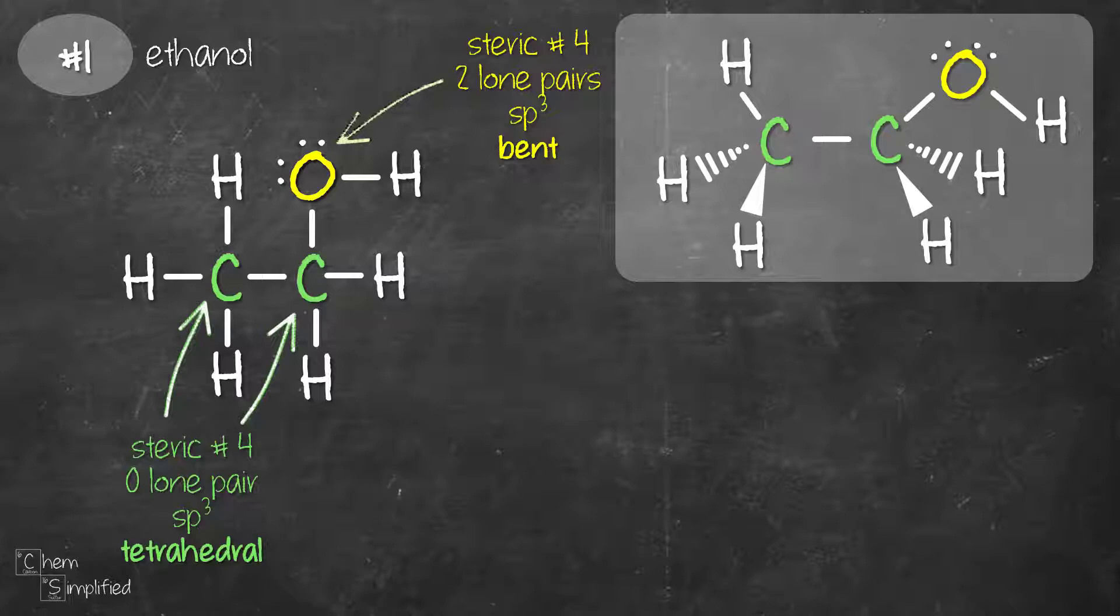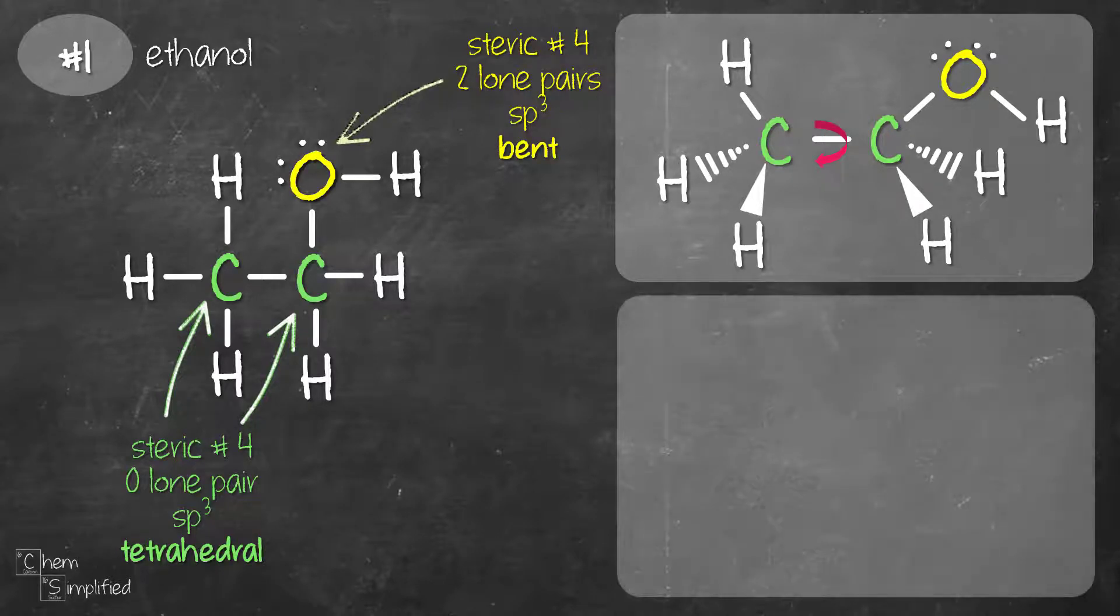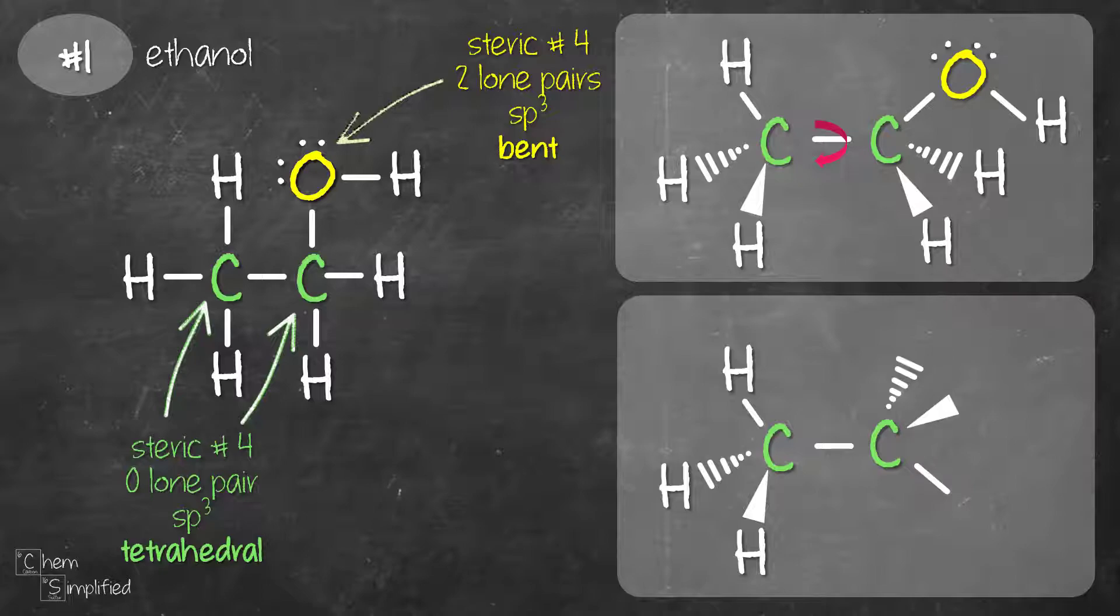So you might be wondering, when we drew the solid line for the second carbon earlier, why did we draw it pointing up? Is it okay to draw it pointing down? Well, the answer is yes. To do so, all we have to do is rotate the C-C bond like that. Everything to the left we'll keep as is, and then we're going to rotate the bond on the second carbon. Now the solid line we're going to draw pointing down. We'll draw the two wedges pointing up. So now we still have a tetrahedral, it's just that the bonds are oriented differently. We fill in the atoms and we're done. Both of these drawings are acceptable; it just depends on how you want to present your structure.